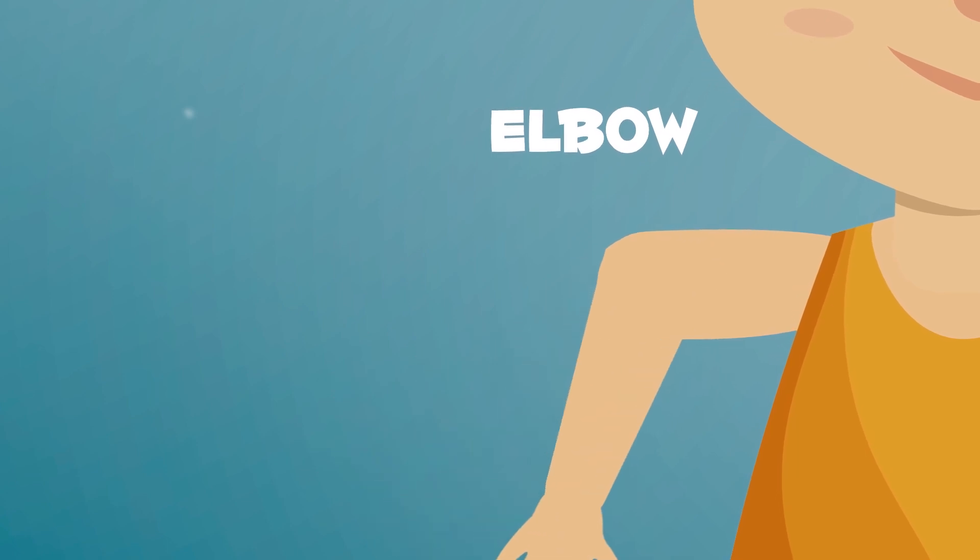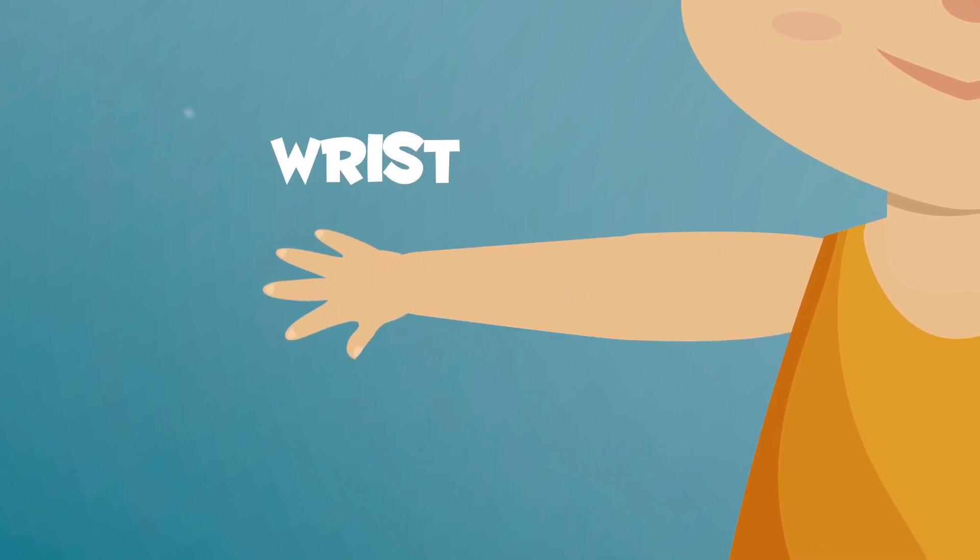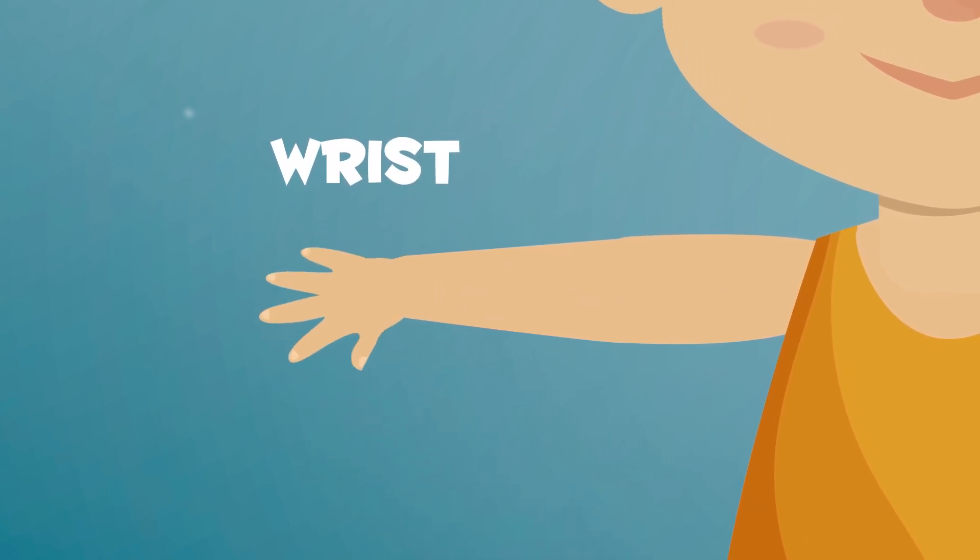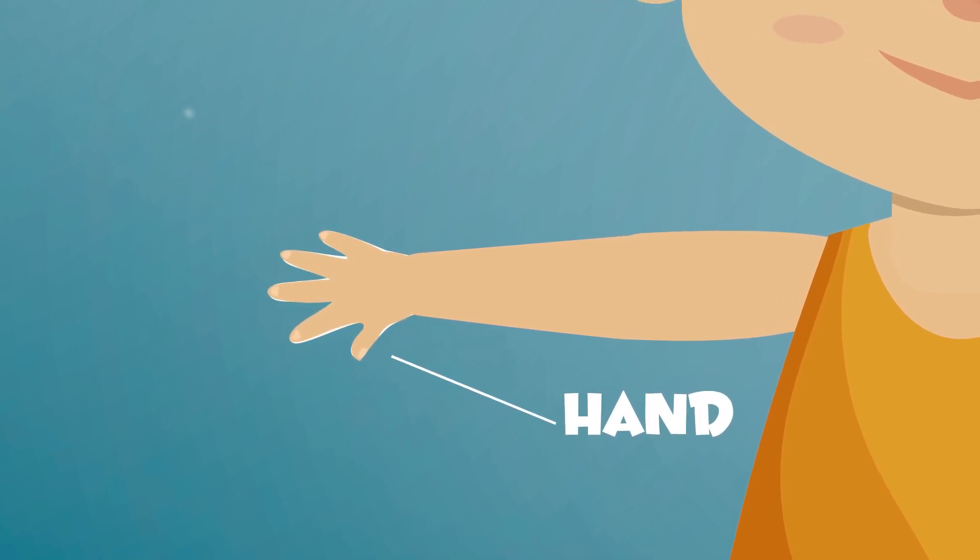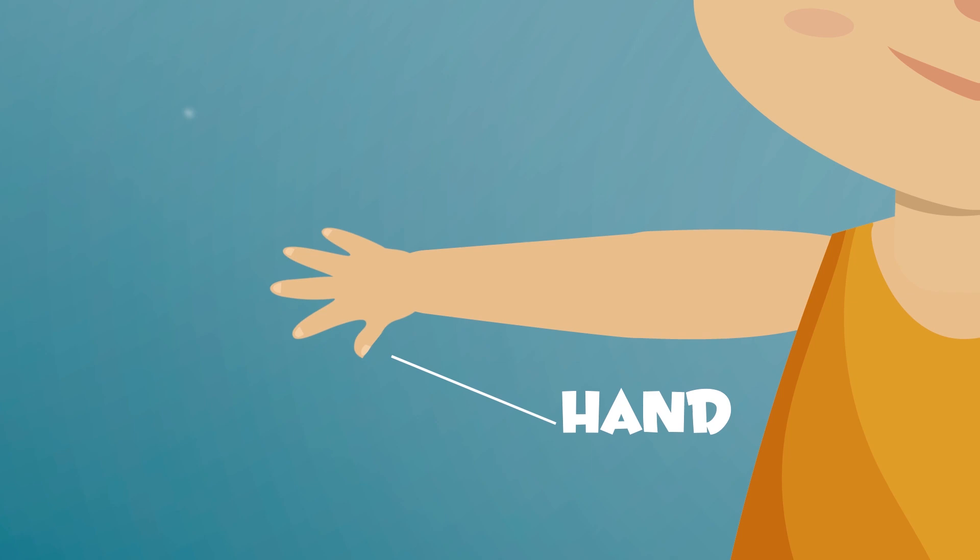Your wrist is a joint that connects your hand and arm. On your hand, you have the palm of your hand and your fingers. Here we can find our sense of touch that is also all over our skin.